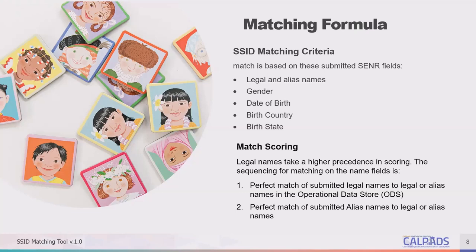The SSID match tool does not have probabilistic matching — hopefully that will be an enhancement added in the future. So it places extreme importance that when you're populating your data, you include your complete student information, including their legal names and aliases if you have them, and consider all of that when making your manual matching efforts.